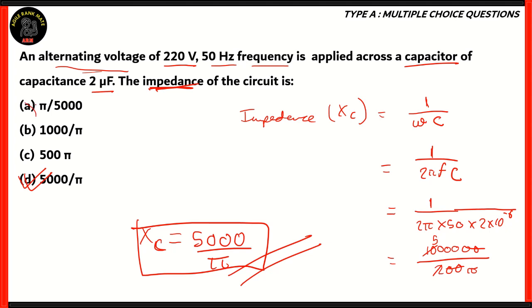Option A says pi over 5,000, which is the inverse. 1,000 over pi and 500 pi are wrong values because they're not concurrent to the value that we got, which is 5,000 over pi. Option D is the correct option.